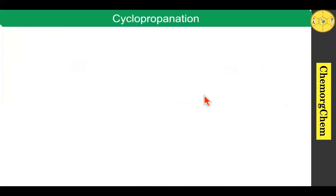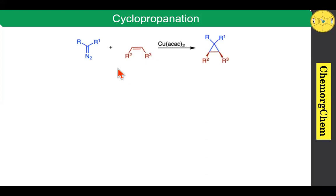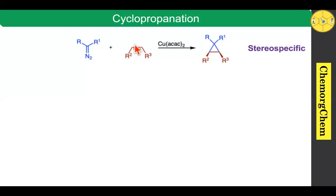Now we are moving on to the applications of copper carbene-based reactions. The first one is the cyclopropanation reaction. For the cyclopropanation reaction, when you take the diazo compound and react it with an alkene in the presence of copper acetylacetonate, it readily produces a cyclopropane compound. This reaction is typically a stereospecific reaction with respect to the alkene geometry.